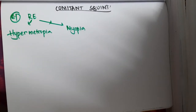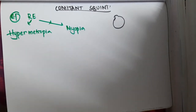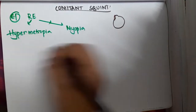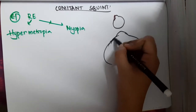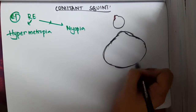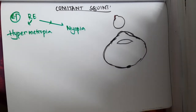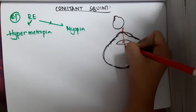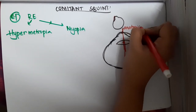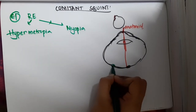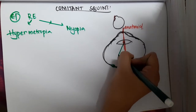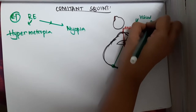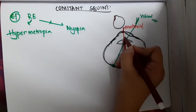Whenever there is hypermetropia, consider the normal eyeball. We have two axes: the visual axis and the anatomical axis. The anatomical axis passes through the center of the cornea, center of the lens, and the center of the retina or optic nerve. A little temporal to this we have the fovea. The visual axis passes through the center of the lens, then the fovea, and then to the object.